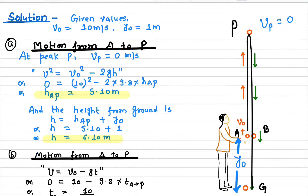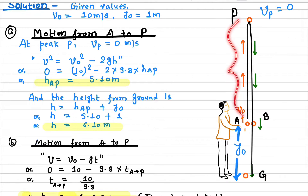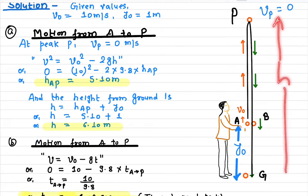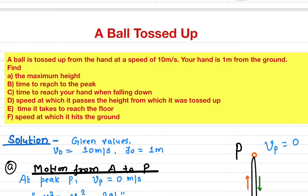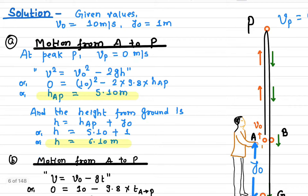Solving the equation gives a height of 5.10 meters from A to P. Since the ball was thrown from a height of 1 meter, the total height from the ground to the maximum height is 5.1 + 1 = 6.1 meters. Now the next question is: how long does it take to reach the peak?